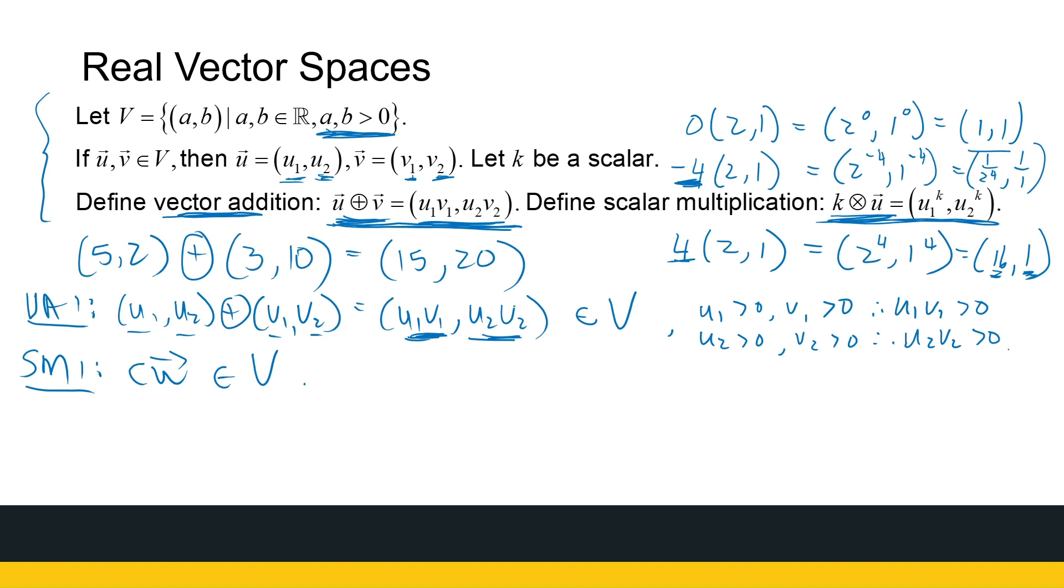So let's look at our 0. So our third vector addition axiom is about a 0. So I need to define a 0 that's in the set, so it definitely can't be (0, 0), because (0, 0) is not in the set. I need something in that set. So that if I add it to my vector u, I get the vector u back.